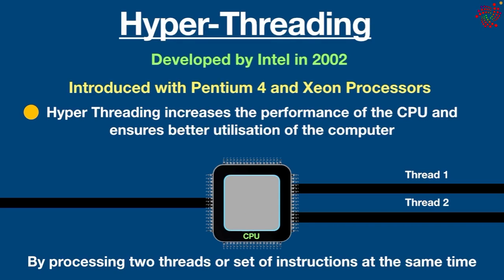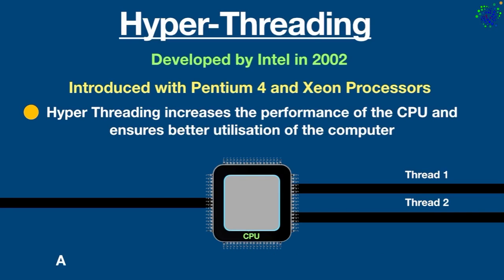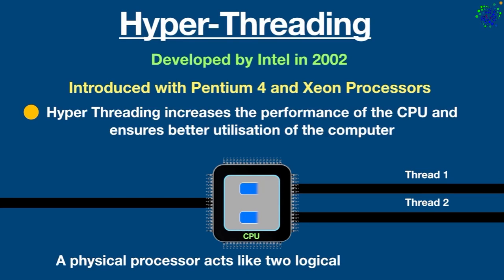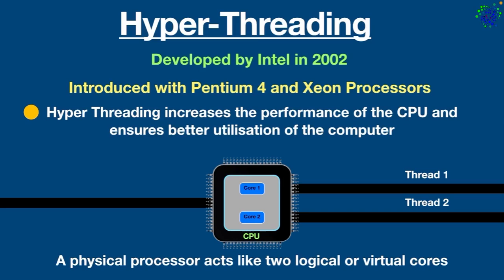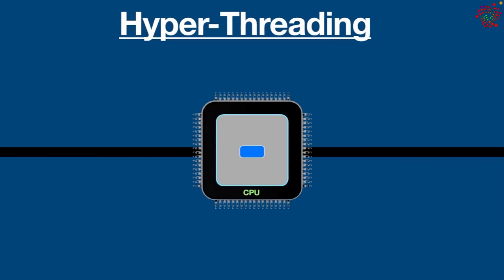Hyper-threading refers to the technology with which a physical processor acts like two logical or virtual cores. This makes it possible for a processor to process more than one task or thread simultaneously. That's the basic idea — pretty easy to understand. Let's break it down into further details.